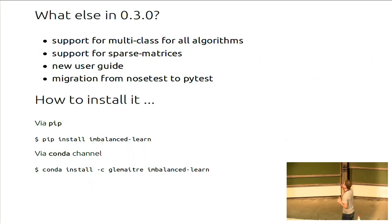What else do we have inside the new release compared to the 0.2? Now we are supporting multi-class for all the algorithms. We are also managing sparse matrices and we try to make life easier to everyone with a new user guide because we didn't have anything that was explaining what the methods were doing. So we just added the API, so now you can read the user guide. And it's just programming things, but we moved from Nose test to PyTest. You can install it from PIP and from Conda from the GMX channel.